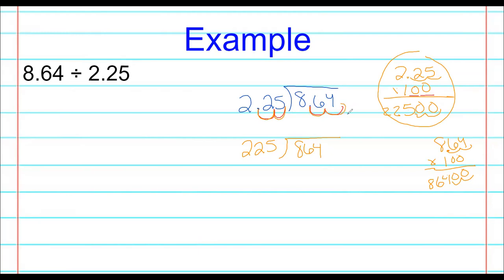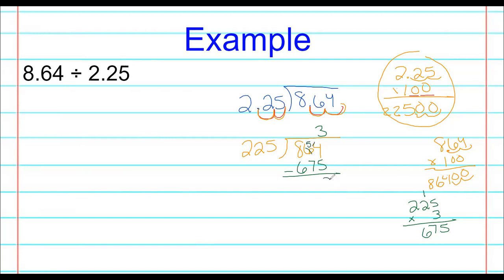Now we divide: how many times can 225 go into 864? I'll guess about three. 225 can't go into 8 or 86, so there are no digits there. 225 times 3: 3 times 5 is 15, 3 times 2 is 6 plus 1 is 7, 3 times 2 is 6 — so we get 675.